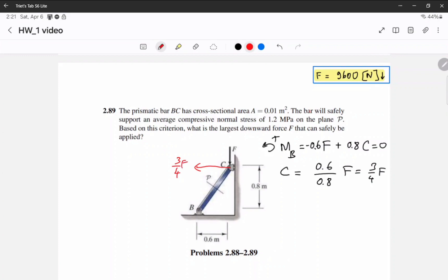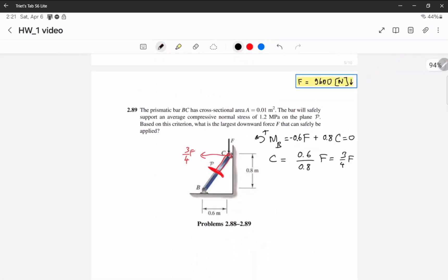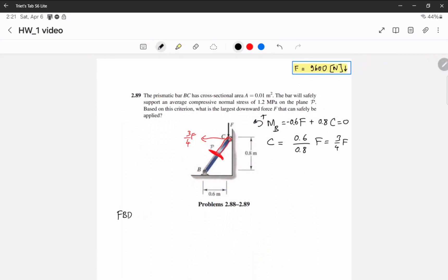Now I'm going to cut at B. Okay, so I have a cut at B and then I'm going to do the FBD from B to C. Then I'm going to have FBD of BC. So this is something like this. So the external force on it is going to be F. And so I have C, which is 3 over 4 F.